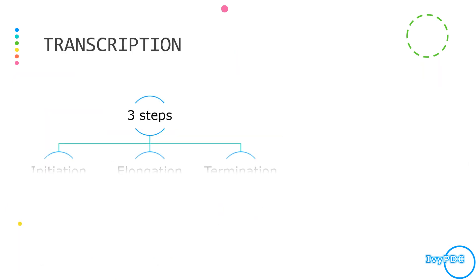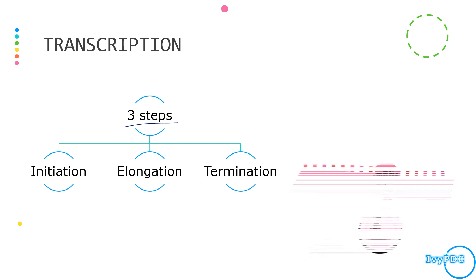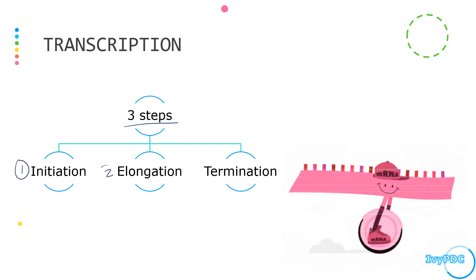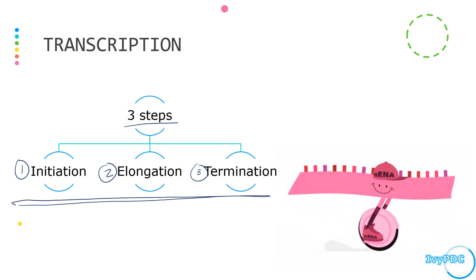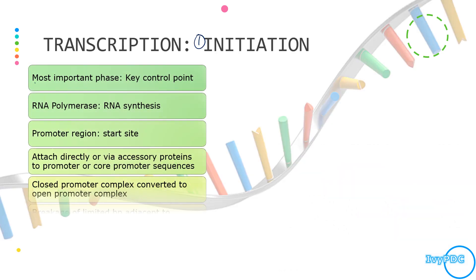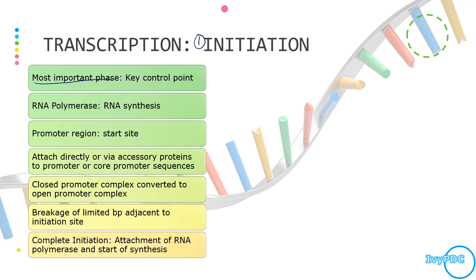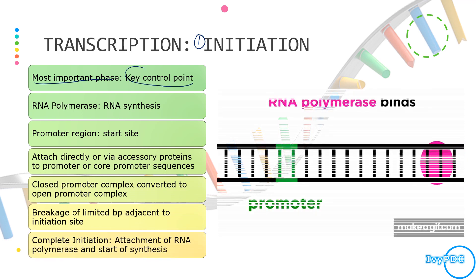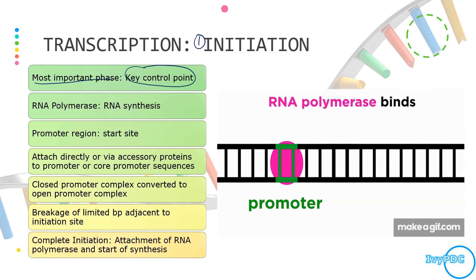In general, transcription has three steps: initiation, elongation, and termination. These three steps are somewhat similar to the steps in DNA replication. The first step is initiation, and this is the most important phase because it is the key control point — without initiation, transcription will not start.